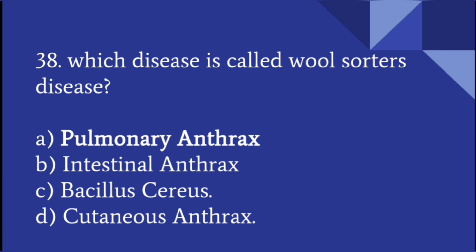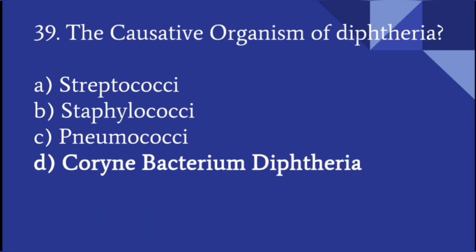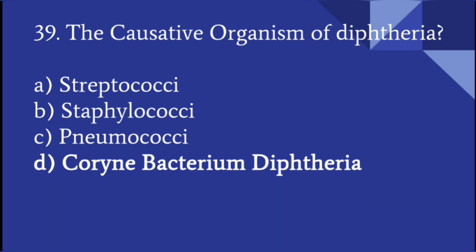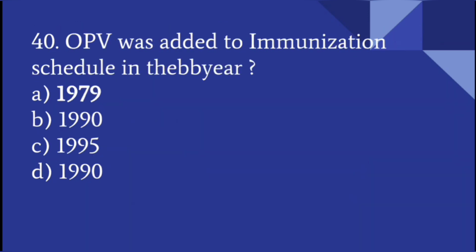Which disease is called wool sorter's disease? Pulmonary anthrax is called wool sorter's disease. The causative organism of diphtheria is Corynebacterium diphtheriae. OPV was added to the immunization schedule in the year 1979.